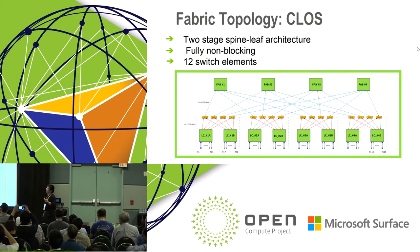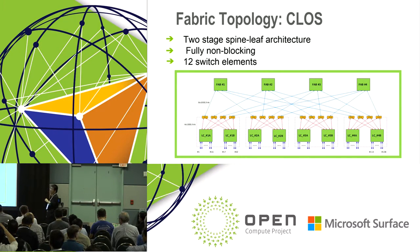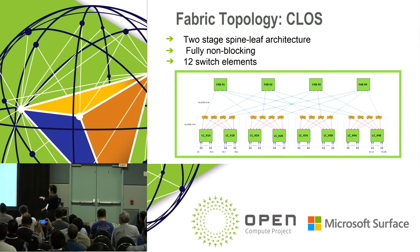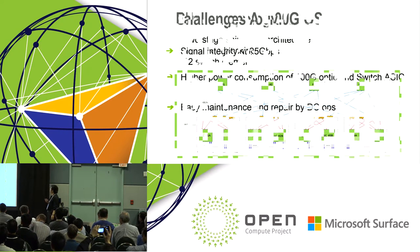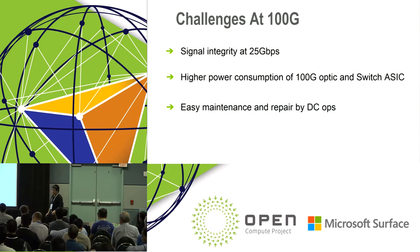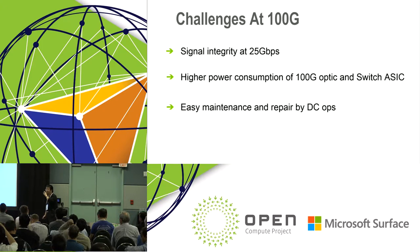To connect those 12 switch elements together, we use traditional Clos topology. We have four fabric cards on top; each fabric card has one switch element. We have four line cards on the bottom; each line card has two switch elements — totaling 12 switch elements. I'll talk about the conceptual design of Backpack and then cover some detailed implementation challenges in Wedge 100.